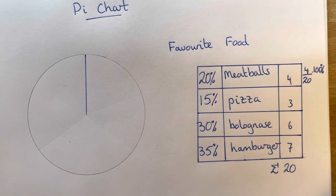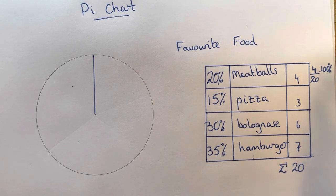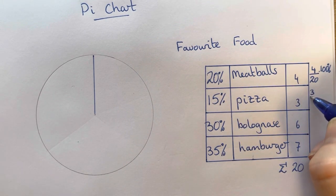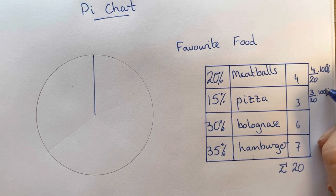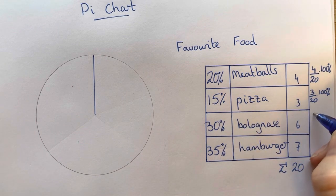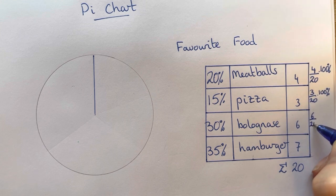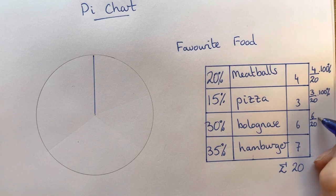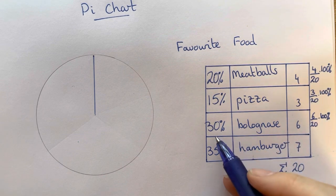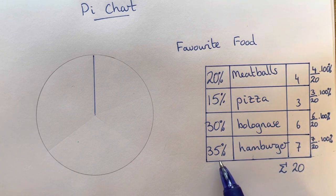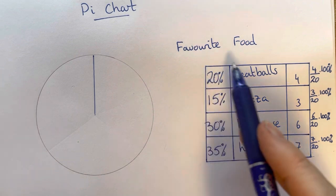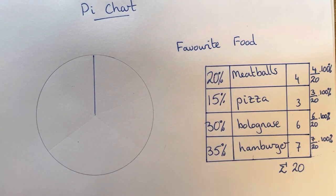3 divided by 20 is 0.15, so times 100 gives us 15 percent. 6 divided by 20 is 0.3, 0.3 times 100 to change it to percent gives us 30 percent. And 7 divided by 20 is 0.35 multiplied by 100 to turn into percentage gives us 35 percent.